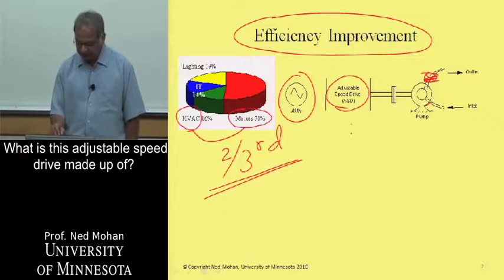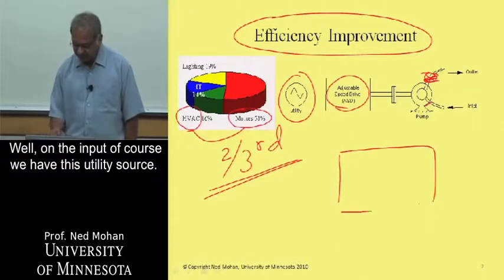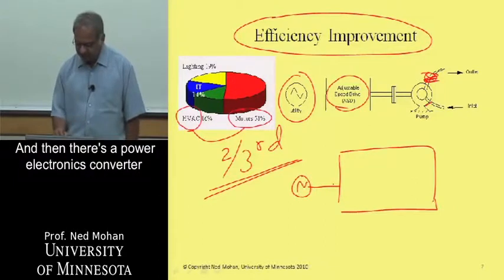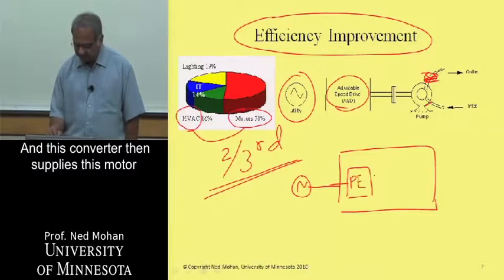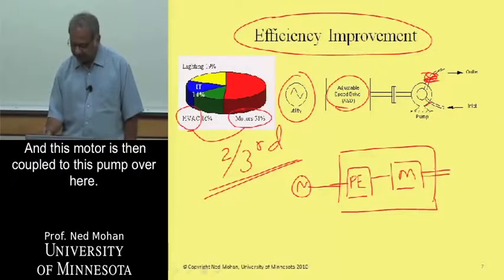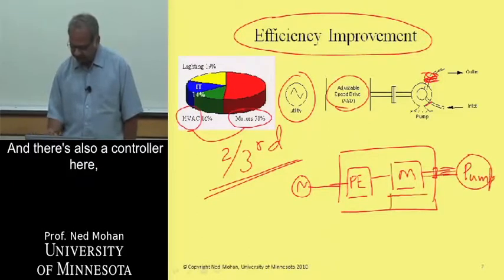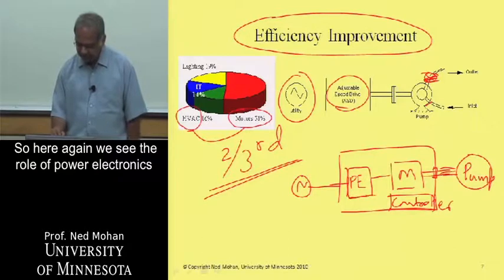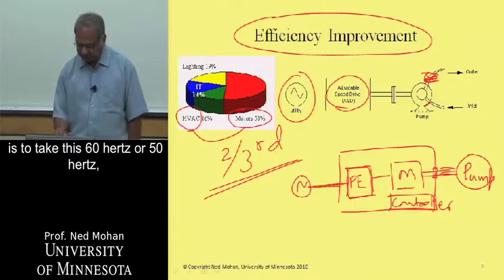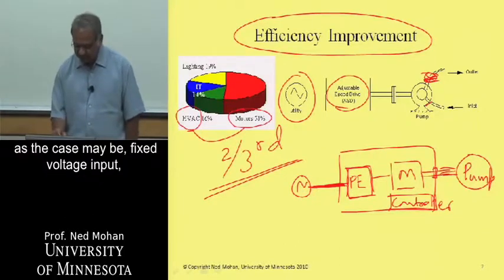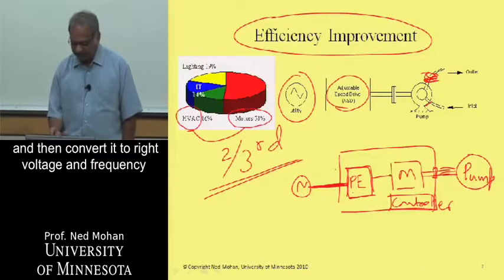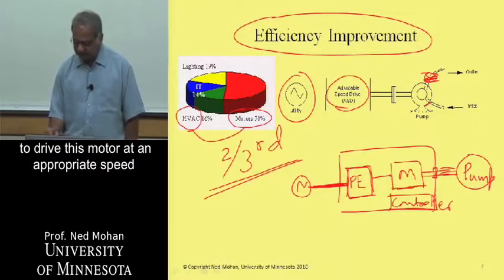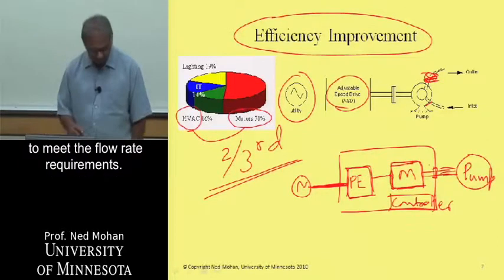What is this adjustable speed drive made up of? On the input we have the utility source, and then there's a power electronics converter which supplies the motor with appropriate voltages and frequencies. This motor is then coupled to the pump, and there is also a controller to control the whole system. The role of power electronics here is to take the 60 or 50 hertz fixed voltage input and convert it to the right voltage and frequency to drive this motor at an appropriate speed to meet the flow rate requirements.